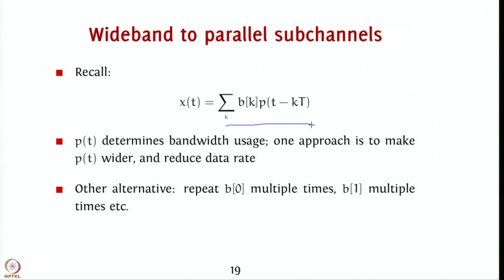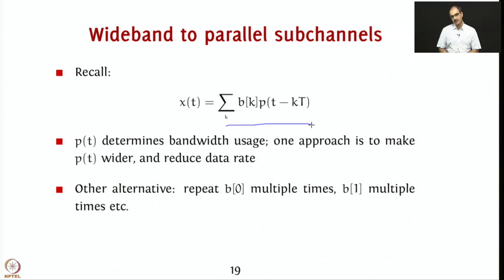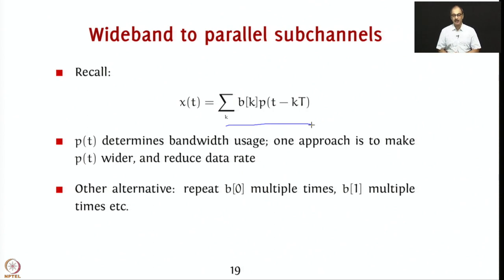Now, p(t) determines bandwidth usage. Since p(t) is the convolution of your g_tx(t) and the channel, the bandwidth usage is determined by the least of the two bandwidths. Typically g_tx(t) is shaped to have a limited bandwidth footprint. One approach to making the channel smaller in the frequency domain is to make p(t) wider and reduce the data rate.